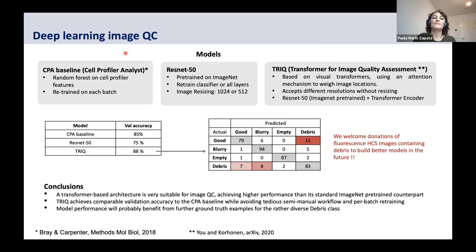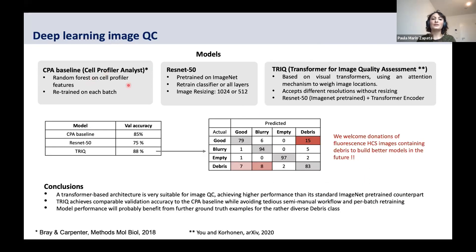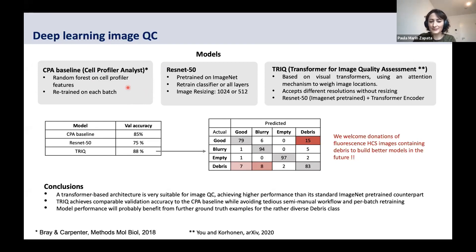For the QC models, we tested three different architectures. The first was a random forest trained on CellProfiler features using the CellProfiler Analyst software, which not only provides a tool to train classifiers but also a tool to correct mistakes and retrain models. It's a very accurate method, but it requires a lot of human input and also needs to be retrained for each batch.